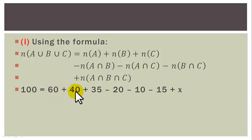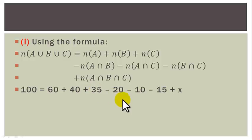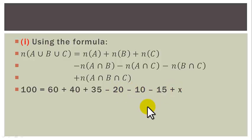Simplifying: 60+40=100, so 100−100=0. Then 35−15=20, and 20−20 cancels out, leaving −10+x=0. Therefore x=10. So 10 consumers like all three products.